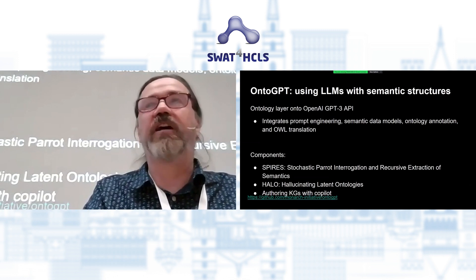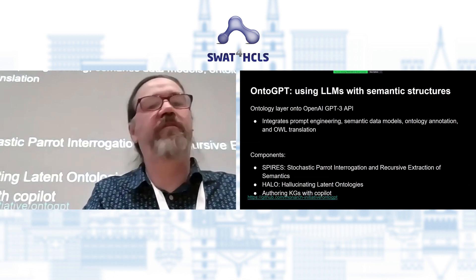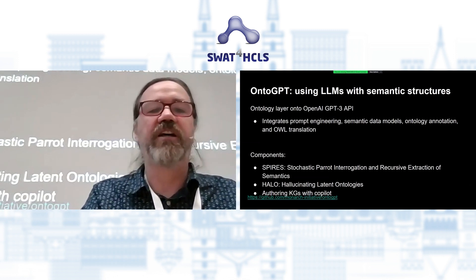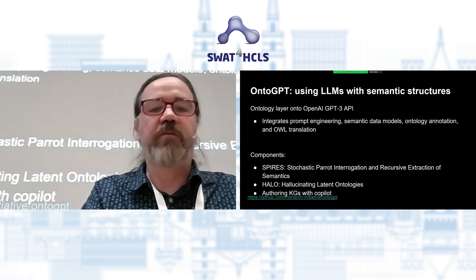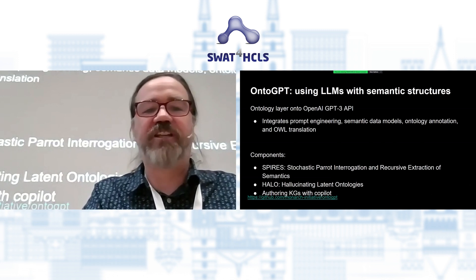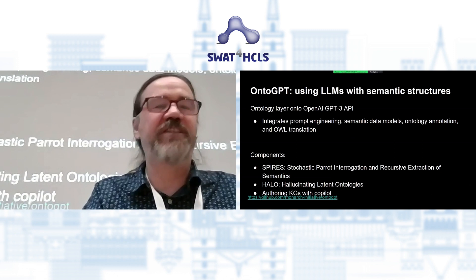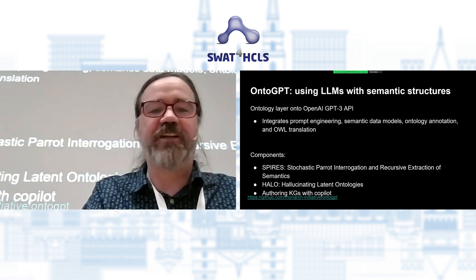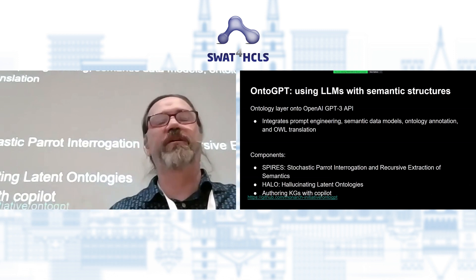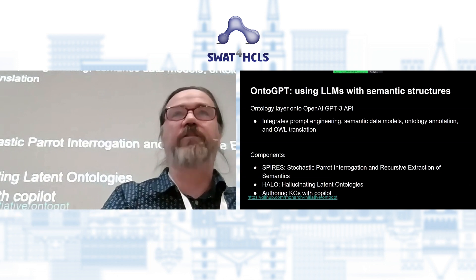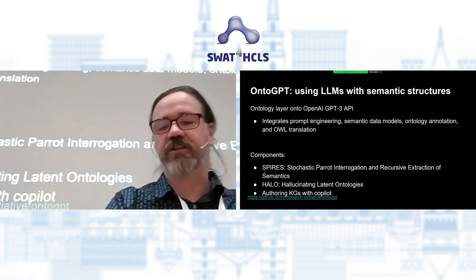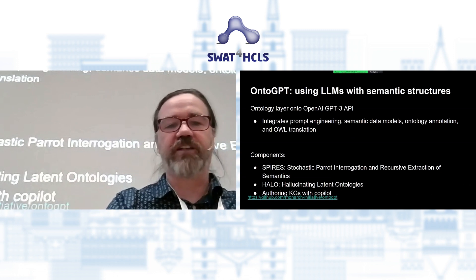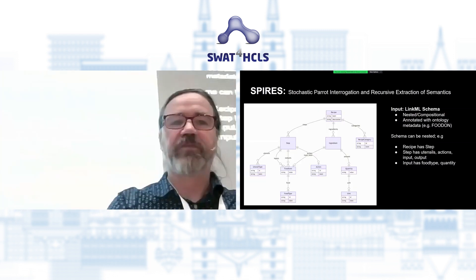The basic idea of OntoGPT is to combine ultra-large language models with semantic structures — essentially an ontology layer on top of the OpenAI GPT-3 API. There are a number of different components. One is called SPIRES — the Stochastic Parrot Interrogation and Recursive Extraction of Semantics — and another is HALO, hallucinating latent ontologies. We've also been doing some experiments with authoring knowledge graphs using GitHub Copilot, which makes use of OpenAI Codex behind the scenes.